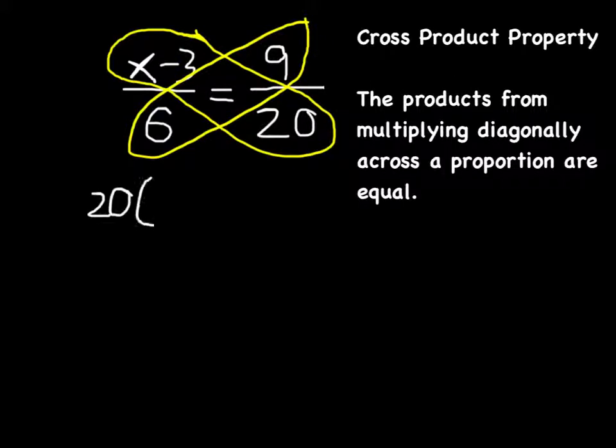20 times x minus 3 in parentheses must equal 6 times 9, which is 54. My next step, I could handle a couple of ways.